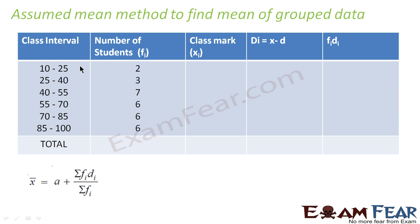The second method which we have is assumed mean method, and this method is also used to find the mean of grouped data.